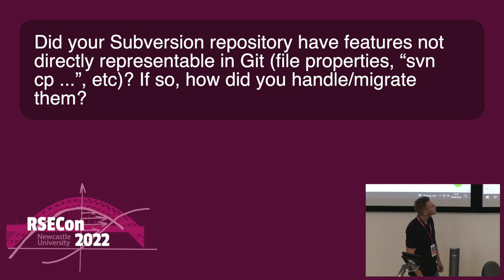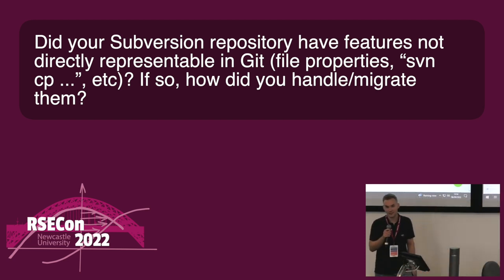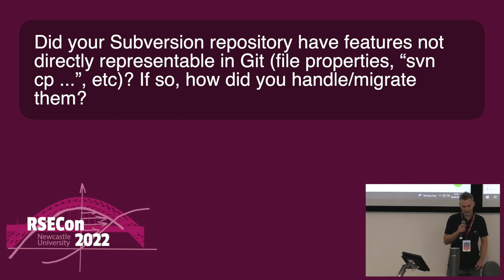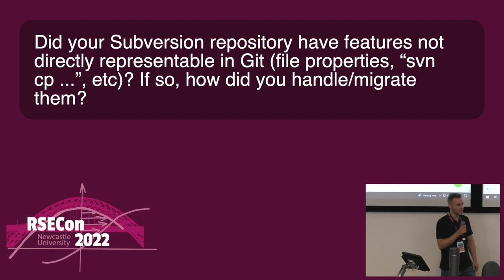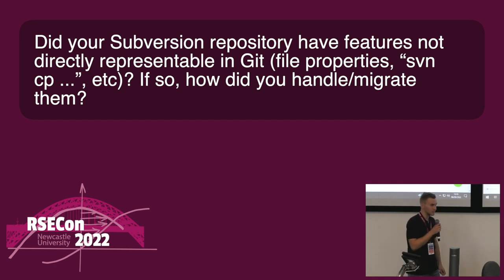Question: Did your Subversion repository have features not directly representable in Git, such as file properties or SVN copy? SVN copy is a good example — I was surprised that svn-all-fast-export could actually handle it. Not by default, but there are options you can include in the rules to detect movements within the repository. It took a little while to find this out, but in the end it was solvable. I haven't found any other features that couldn't be represented in Git. Thank you to Dominic — that was great!